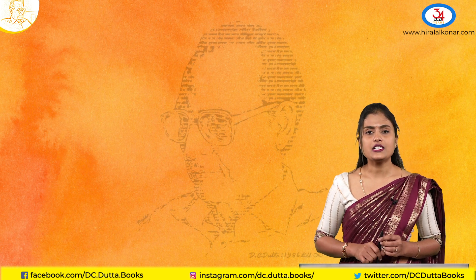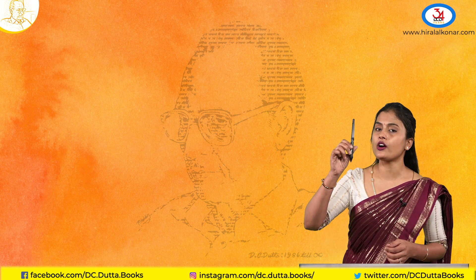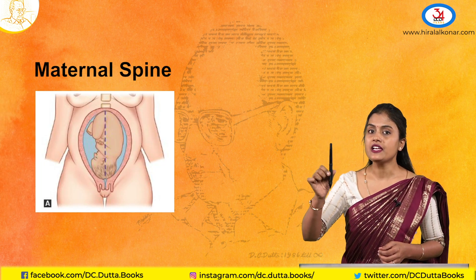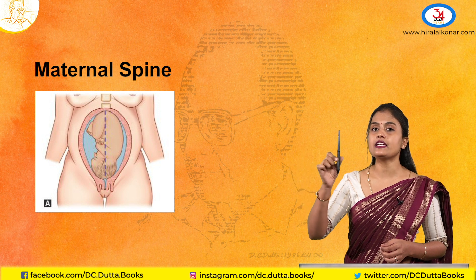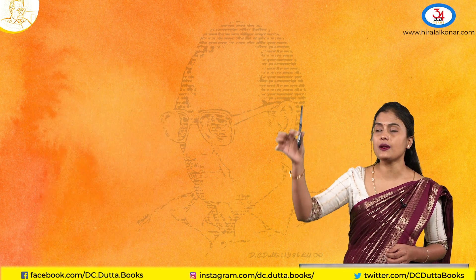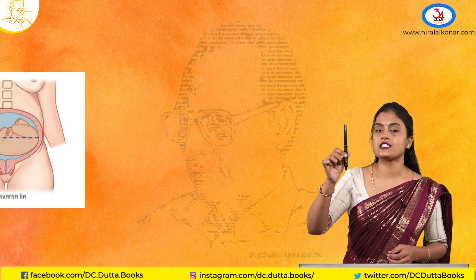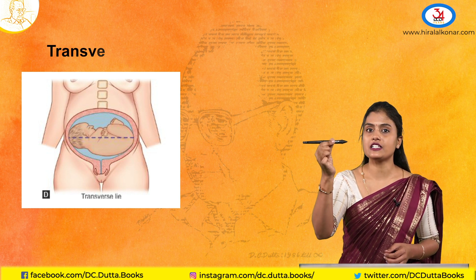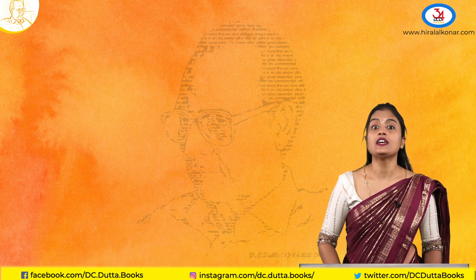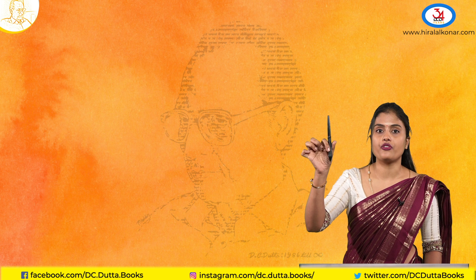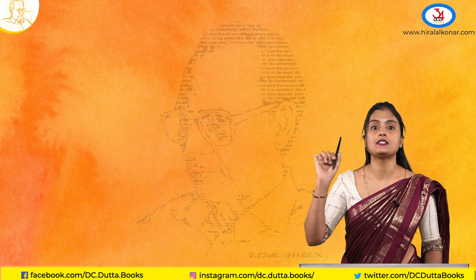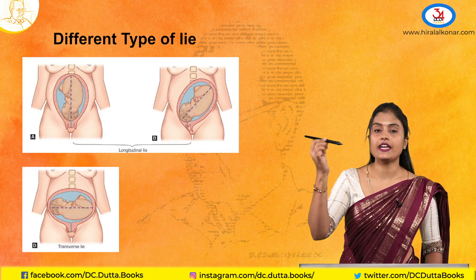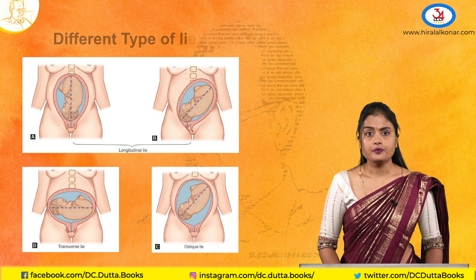Firstly, the lie. What is lie? It is the relationship of the long axis of the fetus to that of the maternal spine. If the long axis of the fetus is parallel to the maternal spine, it is longitudinal lie. If the long axis of the fetus is perpendicular to the maternal spine, it is transverse lie. The different types of lie are longitudinal lie, transverse lie, and oblique lie.